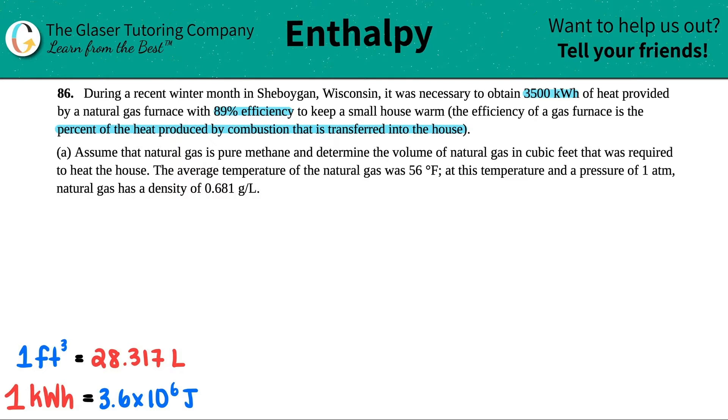Letter A says assume that the natural gas is pure methane and determine the volume of natural gas in cubic feet that was required to heat the house. The average temperature of the natural gas was 56 degrees Fahrenheit, and at this temperature and a pressure of 1 atm, natural gas has a density of 0.681 grams per liter.